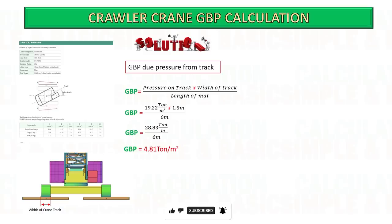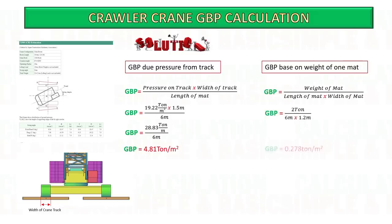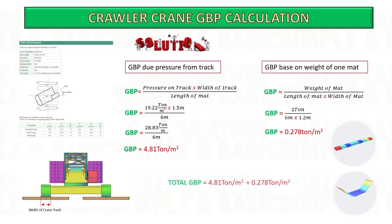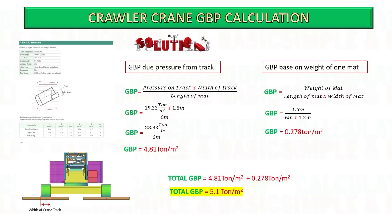When calculating the overall ground bearing pressure we need to consider also the weight of the mats. Please remember that in doing this calculation you are assuming that the crane mats are strong enough to withstand the load and distribute the pressure evenly on the ground.